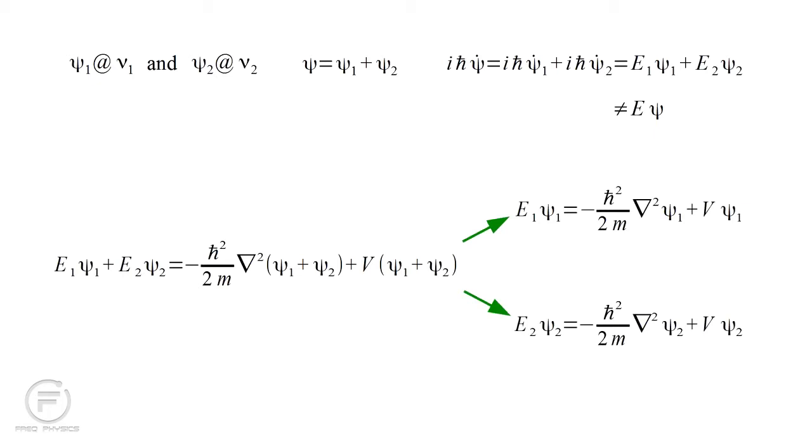And using the theory of Fourier discussed in a previous video, this means that the second form of Schrödinger's equation is truly general, applying to any conceivable field.